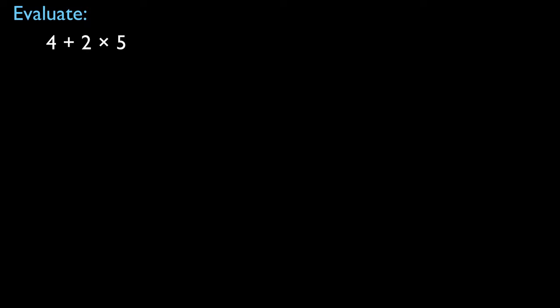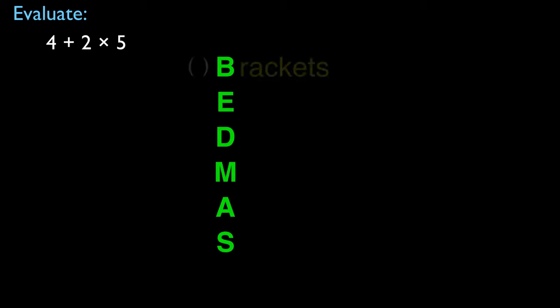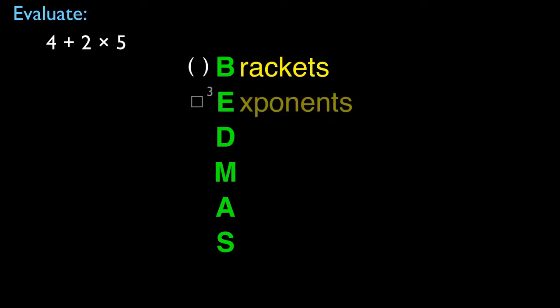It's got an acronym associated with it, and it's called BEDMAS. The B represents brackets — any operations that appear in brackets are always performed first in your calculation. The E represents exponents, so after brackets are performed, then you perform exponents.